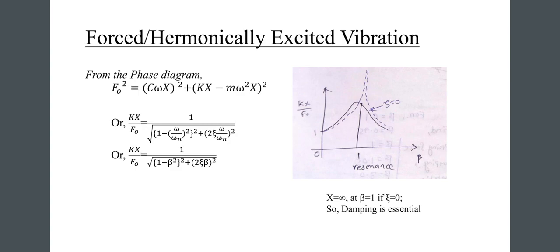Look at the figure: the x-axis represents the frequency ratio (beta) approaching resonance, and the y-axis shows k·X divided by f-naught. At beta equals 1, x goes to infinity when damping zeta equals 0, so damping is essential.